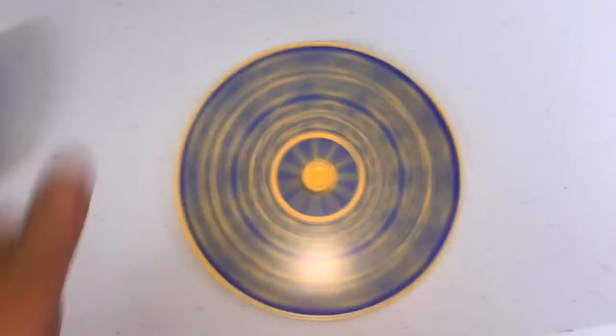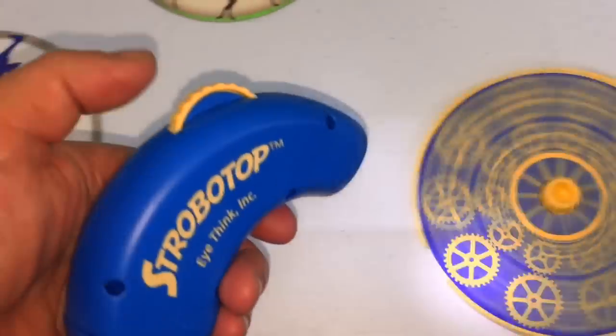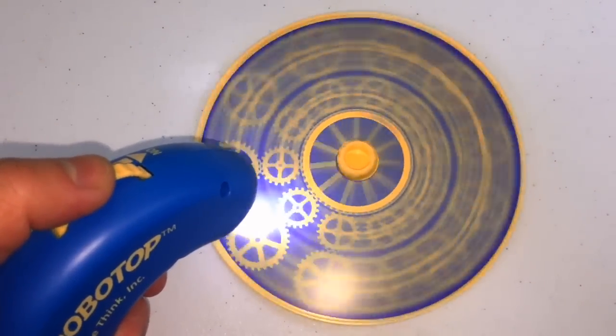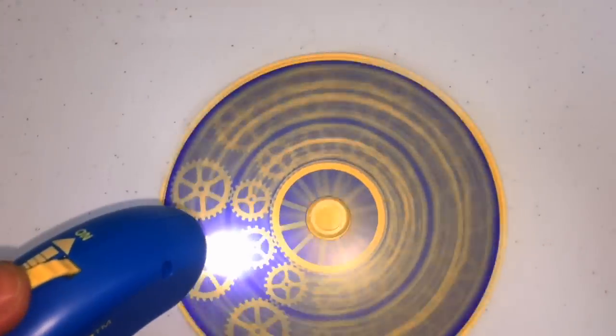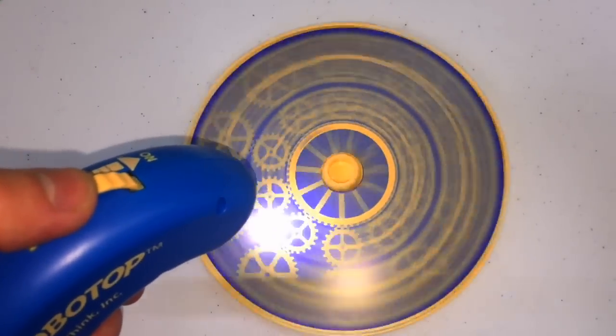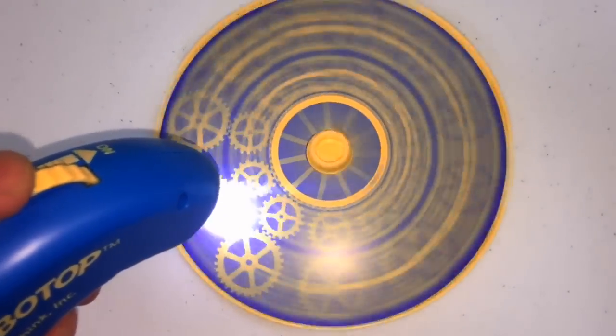You can get it at incrediblescience.com. Check it out. If I just spin it regularly and don't put the light on it, you can't see anything. But watch what happens with the light. Now watch as I turn the dial backward or forward. You can actually change the direction of the spinning gears. Remember, you get 18 total cards. I'll show you a few more after this.